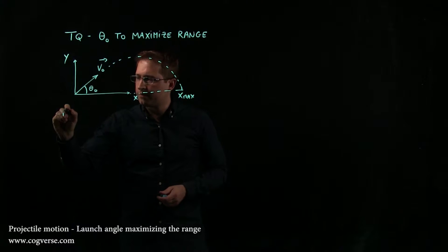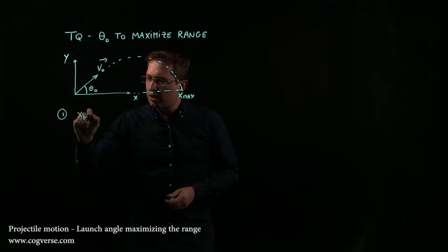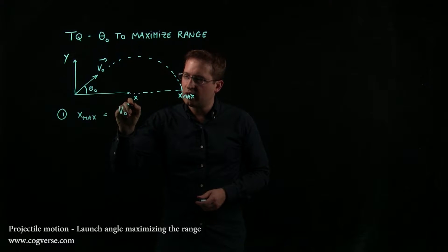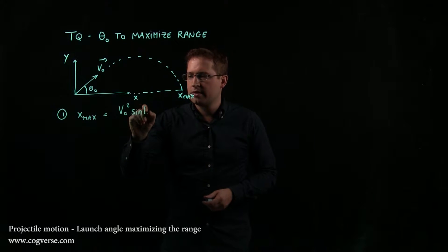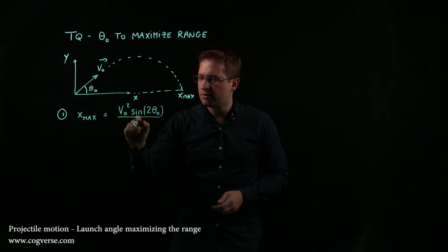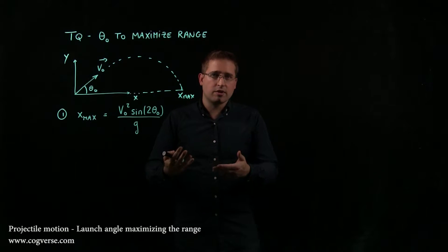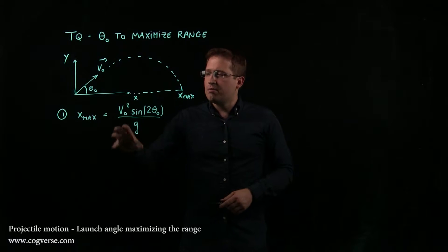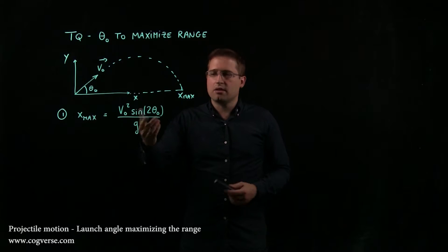The first way to do it is simply by recalling that the range is v₀² sin(2θ₀) divided by g. We derived that in a different video, so if you don't remember where this came from, you can go have a look. But this is the equation of xₘₐₓ, and it depends on θ₀.